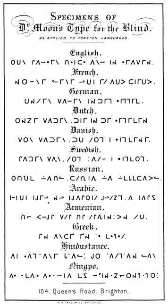Mainland Chinese Braille is a Braille script used for standard Mandarin in China. Consonants and basic finals conform to international Braille, but additional finals form a semi-syllabary, as in Zhuyin. Each syllable is written with up to three Braille cells, representing the initial, final, and tone respectively. In practice, tone is generally omitted as it is in Pinyin.